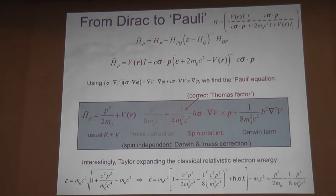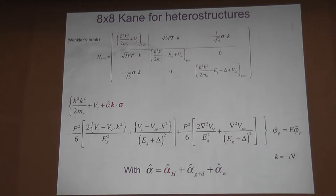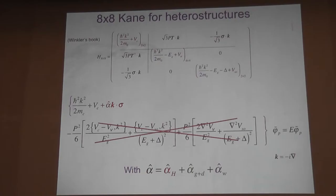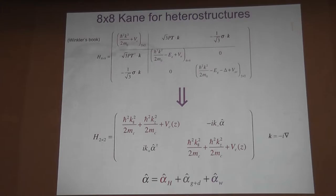I write the spin-orbit interaction in terms of three contributions: the Hartree contribution, the gate plus doping contribution, and the well contribution. They all depend on the derivative of the potential. So all these alphas are some kind of gradient of the potential of the well. The last term is related to the Darwin term - it's not spin-dependent, it's very small, so for the purpose of this talk I neglect it. At the end of the day, I go from an 8x8 description to a 2x2 Hamiltonian with an effective alpha spin-orbit coupling.